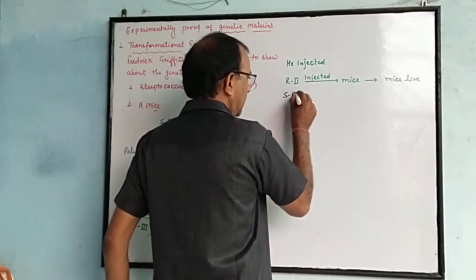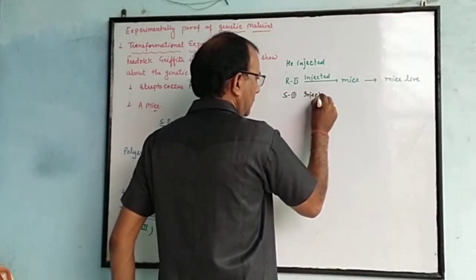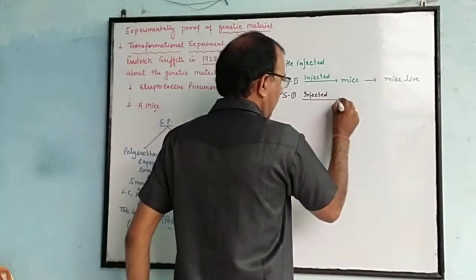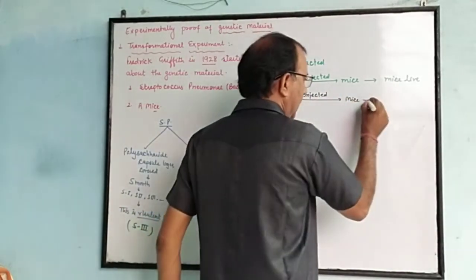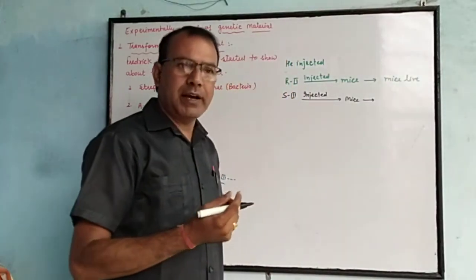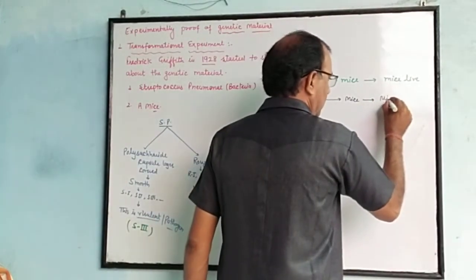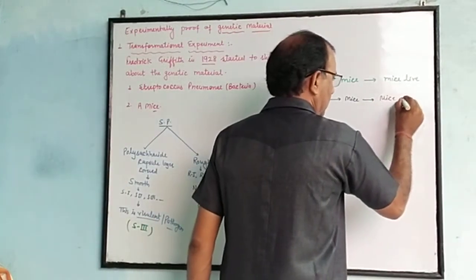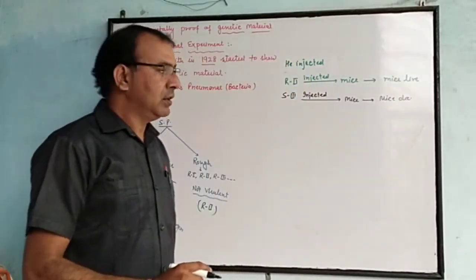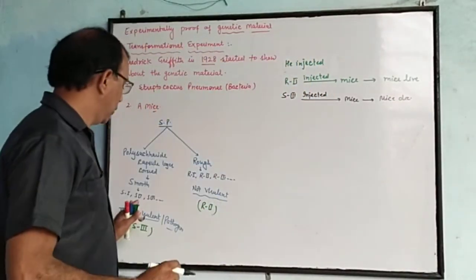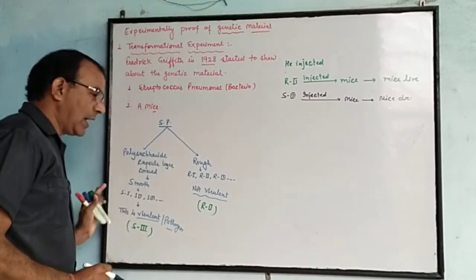After that, he injected S3 bacteria into the mice. He saw that this time the mice died due to pneumonia caused by Streptococcus pneumoniae, because the smooth S3 strain is virulent.